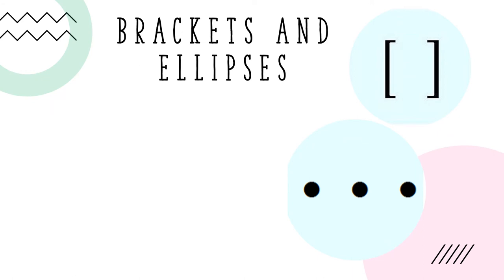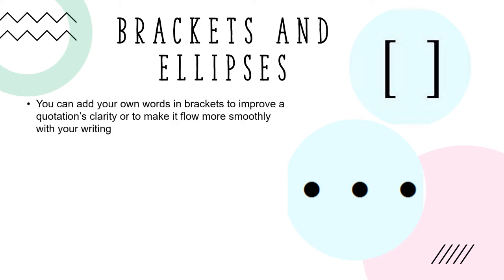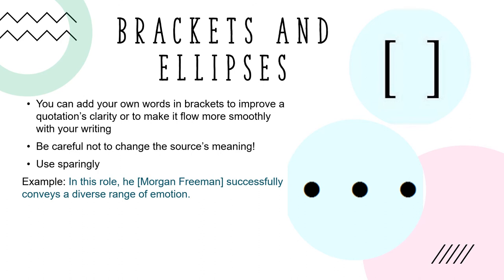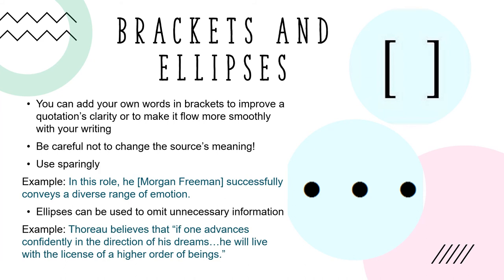Note that you can also use brackets and ellipses in your quotations when you need to modify a quotation. You can add your own words in brackets to improve a quotation's clarity or to make it flow more smoothly with your writing, but be careful not to change the source's meaning and use brackets sparingly. For example: "In this role, he [Morgan Freeman] successfully conveys a diverse range of emotion." Here, brackets are used to clarify who the pronoun "he" is referring to. Ellipses can be used to omit unnecessary information from a quotation. For example: "Thoreau believes that if one advances confidently in the direction of his dreams... he will live with the license of a higher order of beings." The writer has replaced some words with ellipses to shorten the quotation while retaining its overall meaning.